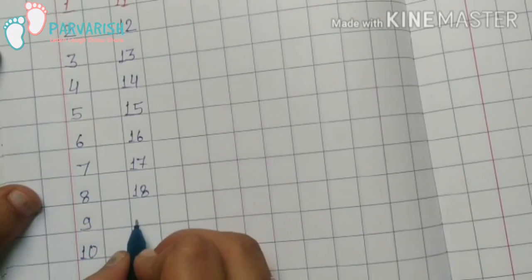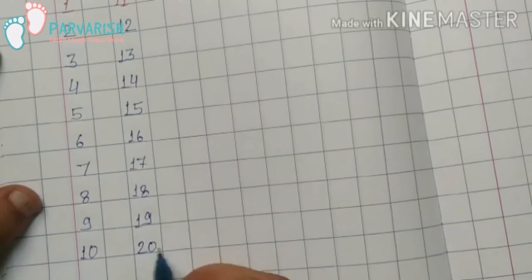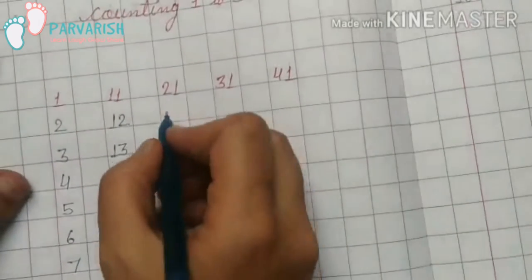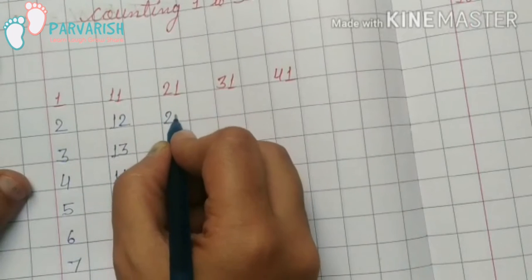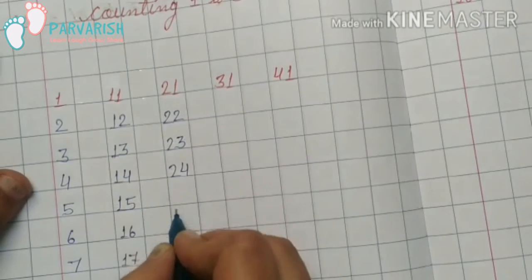1-8, 18; 1-9, 19; 2-0, 20; 2-1, 21; 2-2, 22; 2-3, 23.